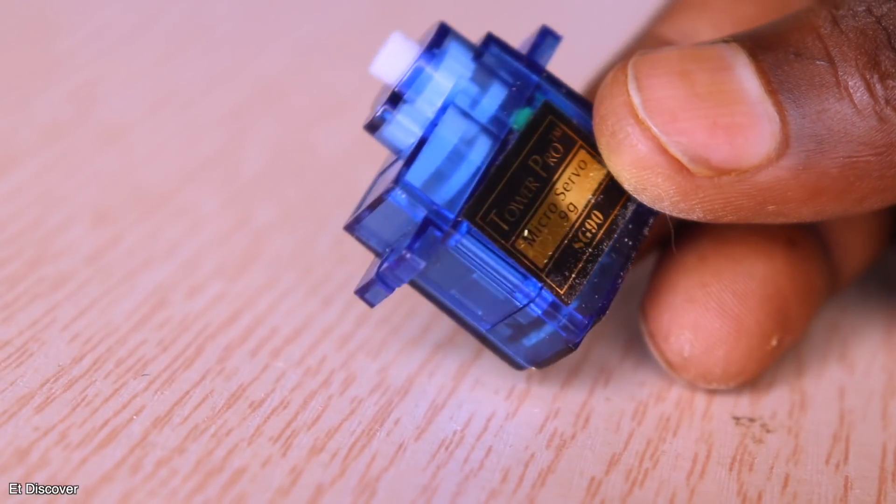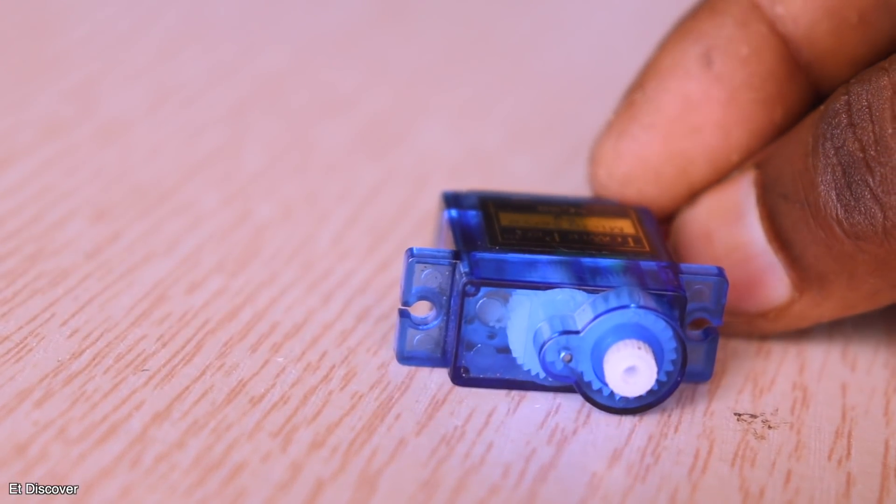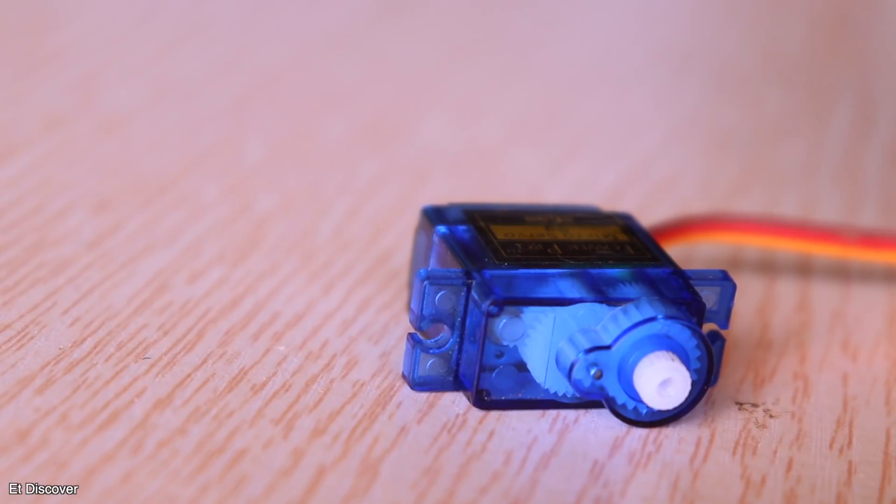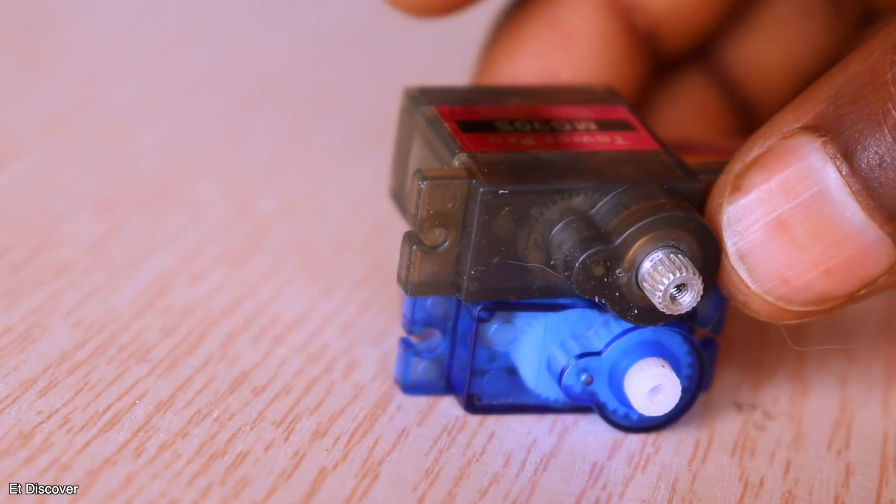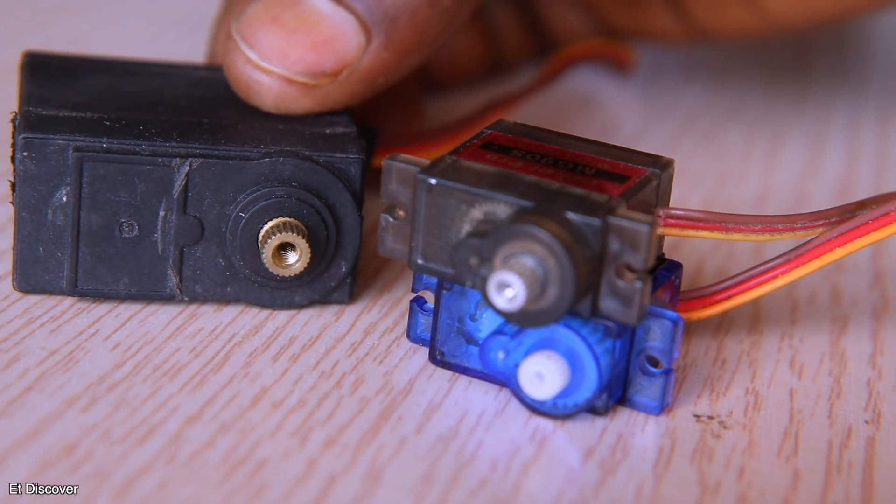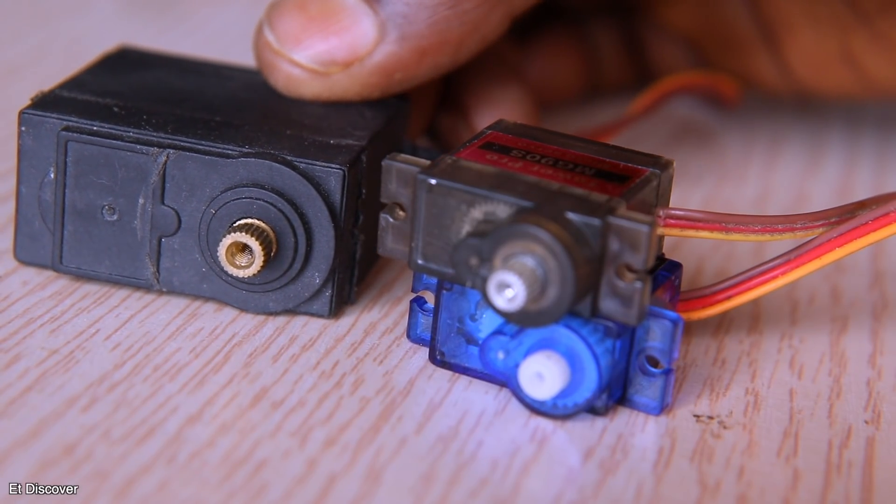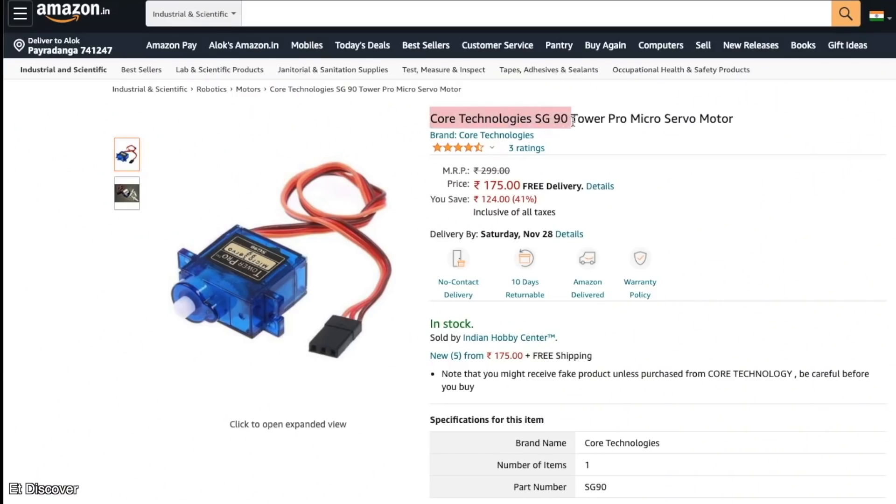But we all know that the most used servomotor in our daily necessities is SG90. This model also has a metallic version of it. You may also have seen slightly larger servomotors which are of nylon gear and maybe of metallic gear. And the price of such servomotor tends to be somewhat within our budget.